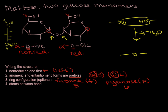One, two, three, four, five, and six. One, two, three, four, five, and six. Now we see that the linkage occurs between C1 on the first, the non-reducing sugar, and C4 on the second sugar. So this is a 1,4 linkage.